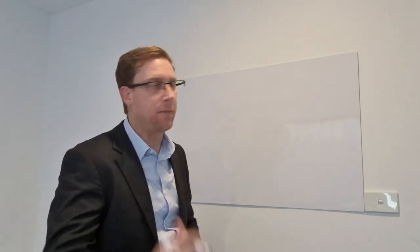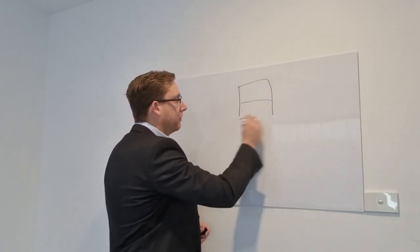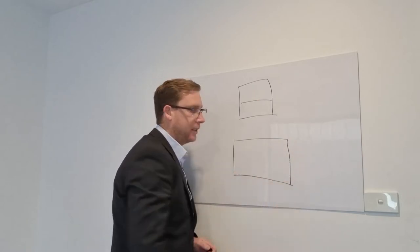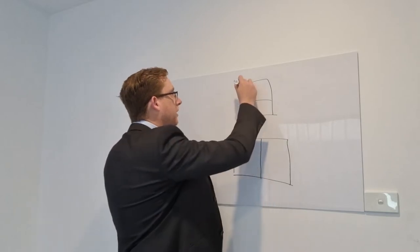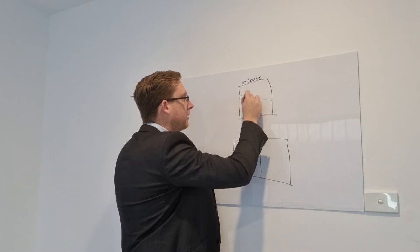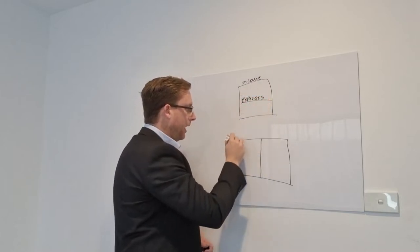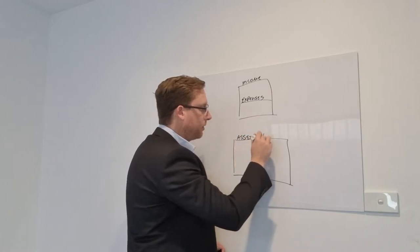This all comes down to the very first thing that you need to really understand, which is the financial statement. Up here we've got our financial statement and down here we've got your assets and liabilities. Up the top here you've got your income, here we have your expenses, here we've got your assets, and here we've got your liabilities.